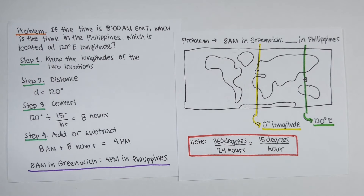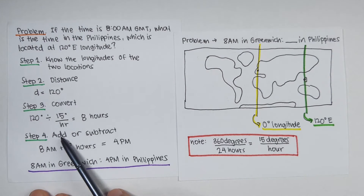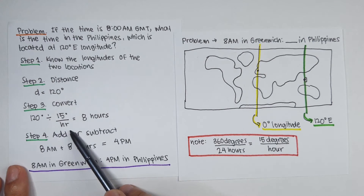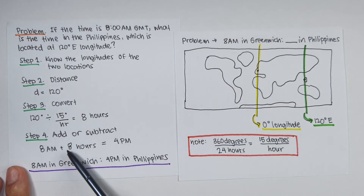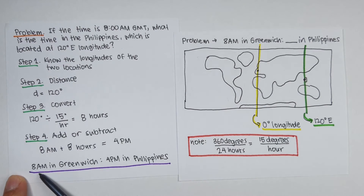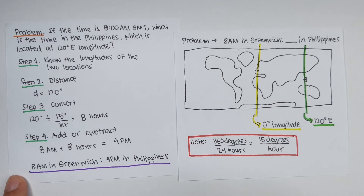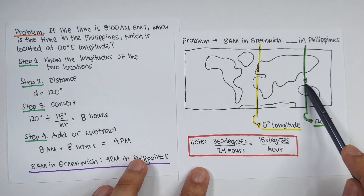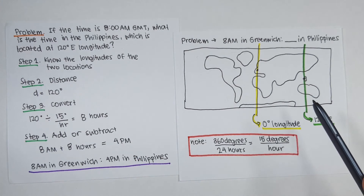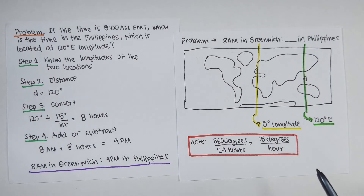Step number four is to add or subtract the time difference. In this case we have to add: 8 a.m. plus 8 hours equals 4 p.m. Meaning if it is 8 a.m. at Greenwich, it is 4 p.m. in the Philippines. Why did we choose to add? It's because the Philippine time is advanced — way ahead of Greenwich time. That is why we add 8 hours.